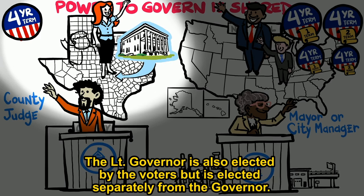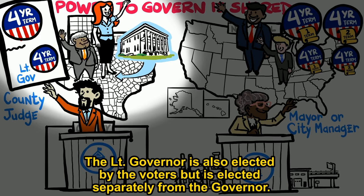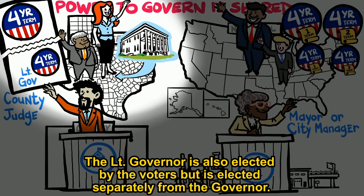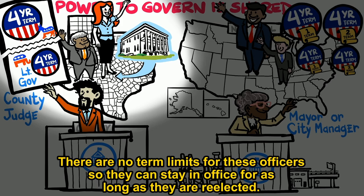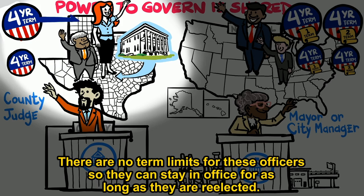The lieutenant governor is also elected by the voters, but is elected separately from the governor. This means that they could be from different political parties. There are no term limits for these officers, so they can stay in office for as long as they are re-elected.